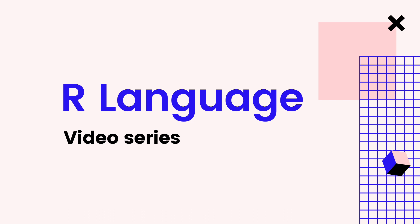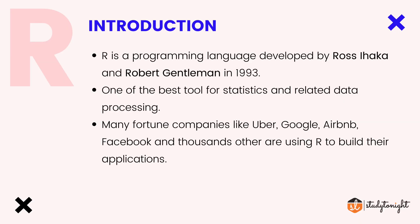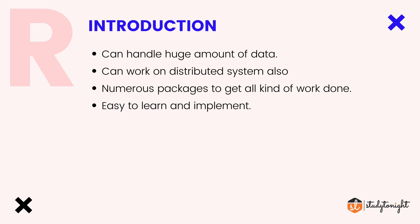R is one of the most widely used programming languages, specifically for machine learning and data science, along with data analysis and visualization. It was developed by Ross and Robert in 1993 and is one of the best statistics tools for data processing, data cleaning, data preparation, and machine learning. Many Fortune companies like Facebook, Google, and Uber use R for one or more of their functionalities.